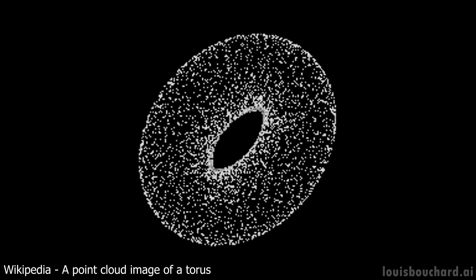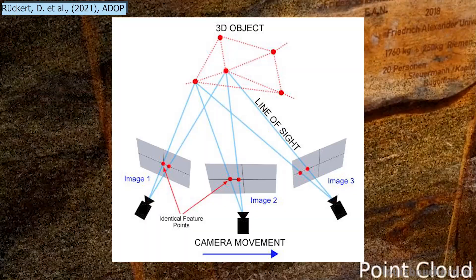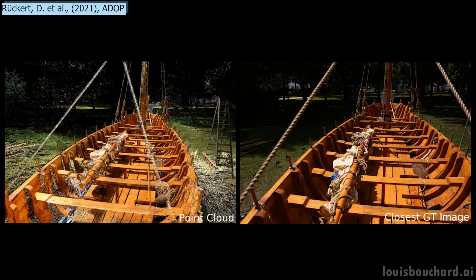These points also have the appropriate colors and luminance from the images you took. A point cloud is made using multiple photos triangulating the corresponding points to understand their position in 3D space. You now have your photos and a point cloud — your 3D draft — and you are ready to improve it.